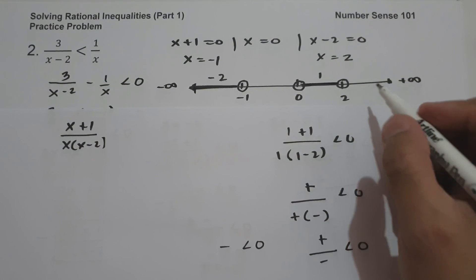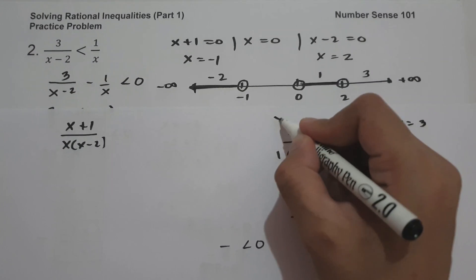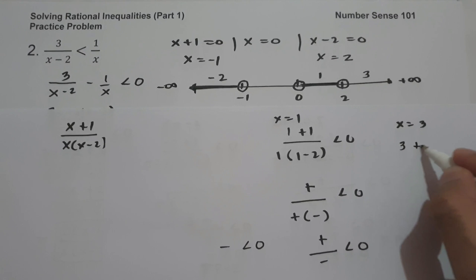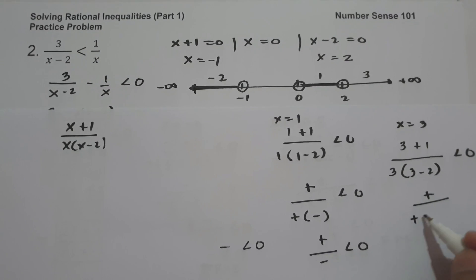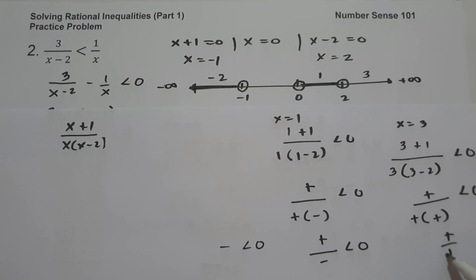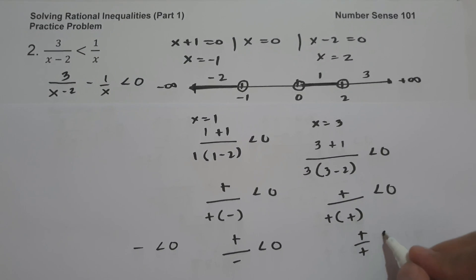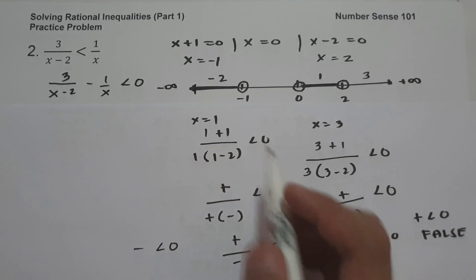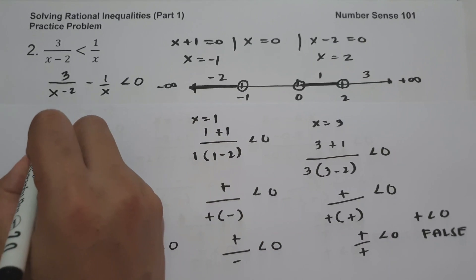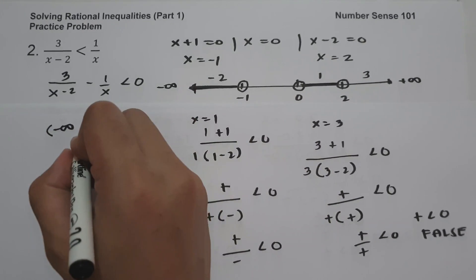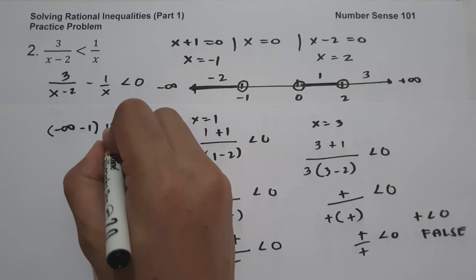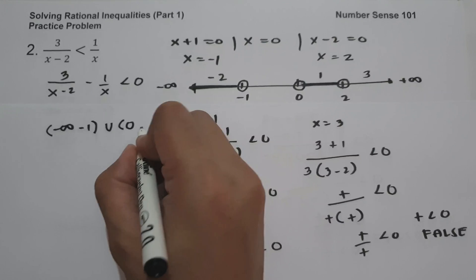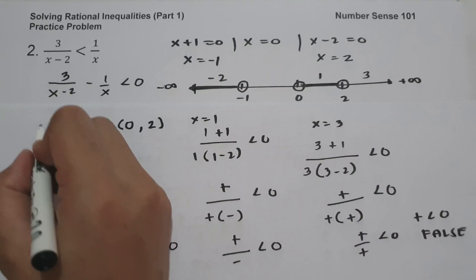Testing a number greater than 2, say x equals 3: 3 plus 1 is positive, and 3 times 3 minus 2 is positive. Positive divided by positive is positive, not less than 0 — this is false. So in interval notation, our answer is parenthesis negative infinity to negative 1, using parentheses because negative 1 is not included, union 0 to 2 with parentheses because neither 0 nor 2 is included. The answer is (-∞, -1) ∪ (0, 2).